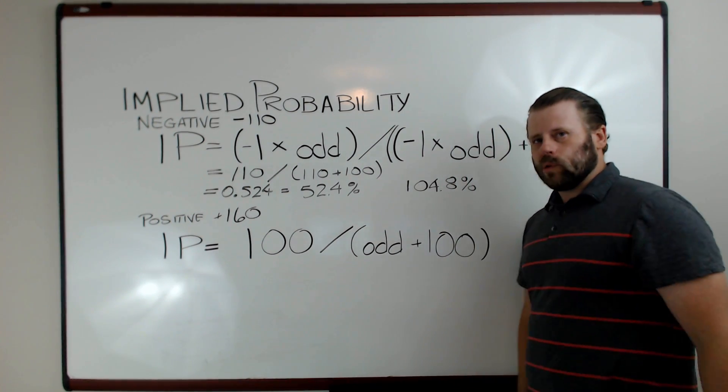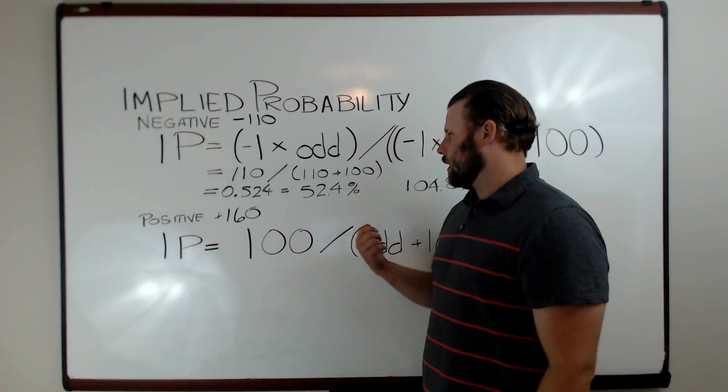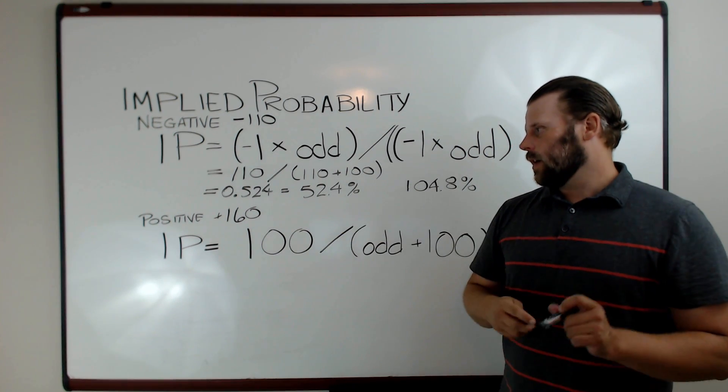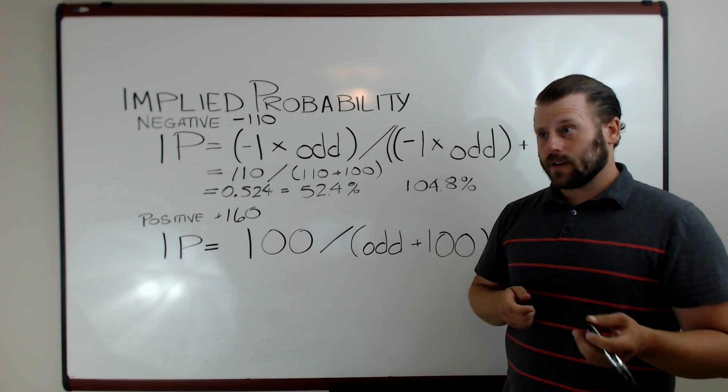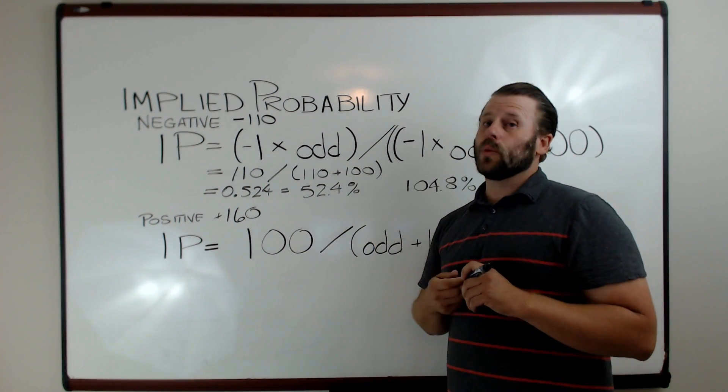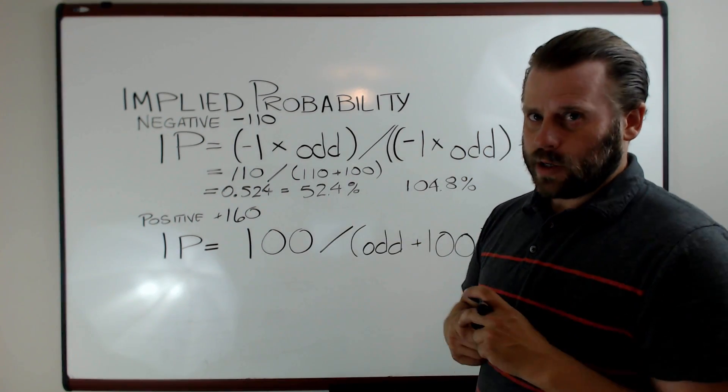Let's work through a complete example, a money line example, that will help us look at that a little more clearly. We'll start out with a bet, a money line, an actual money line set of odds: plus 160 for the dog, minus 190 for the favorite. Let's calculate out the plus 160.